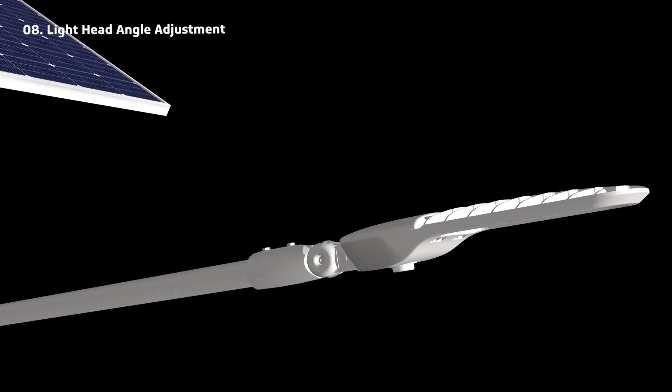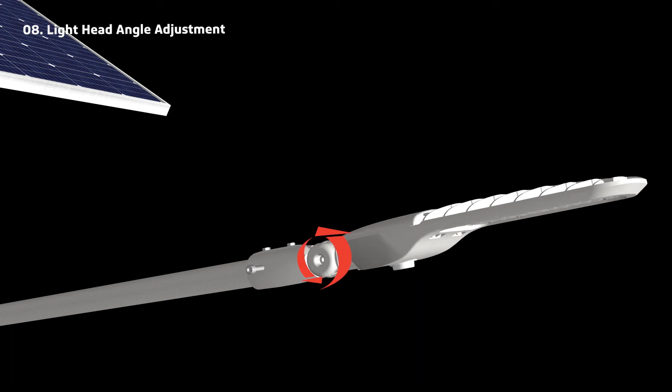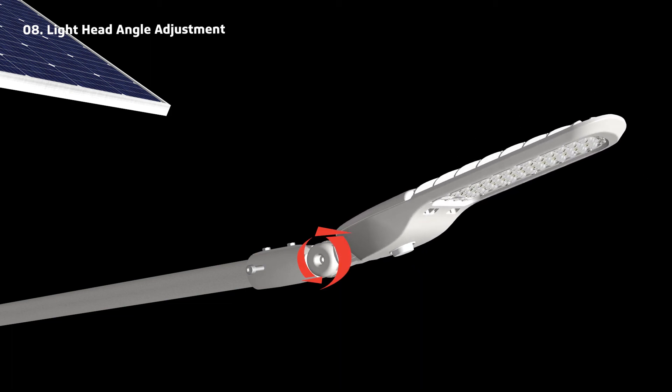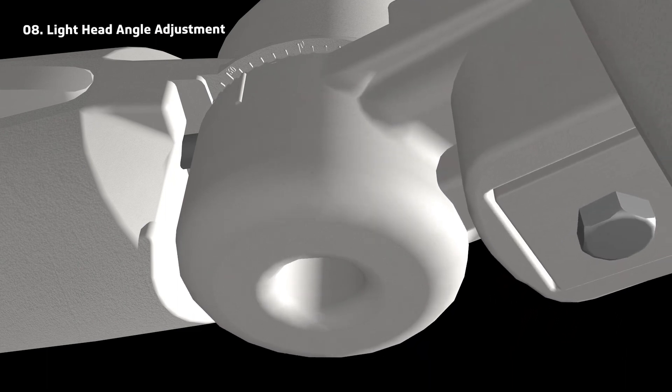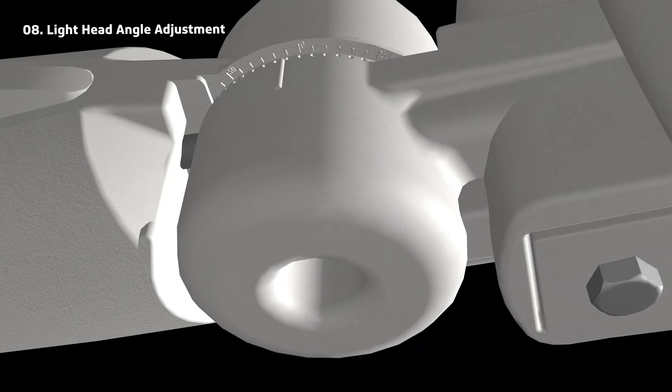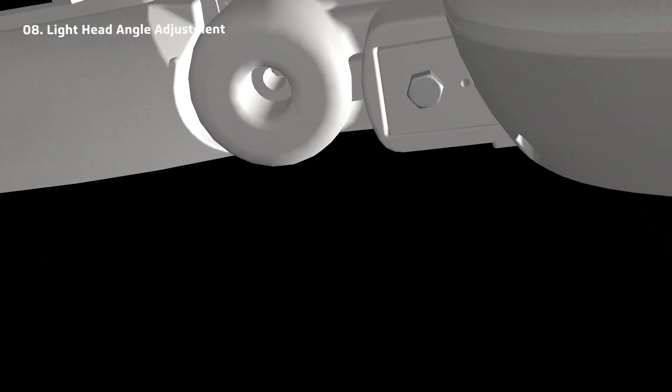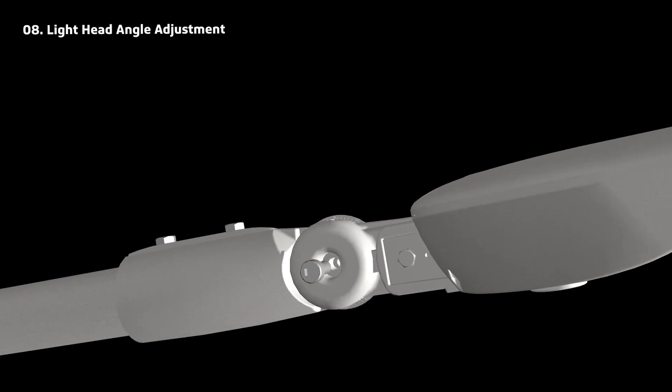The light head is adjustable. Remove the screws on the light head to adjust the angle. Then tighten for desired angle.